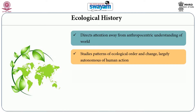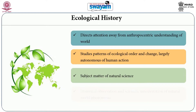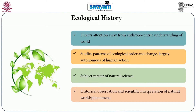Ecological history therefore directs attention away from an anthropocentric understanding of the world. It studies the pattern of ecological order and change, which are largely autonomous from human action. Ecological history may be considered as a branch of knowledge which tries to understand nature or ecology from a historical perspective where human actions are largely considered as an external factor, as a historical observation and scientific interpretation of the natural world.